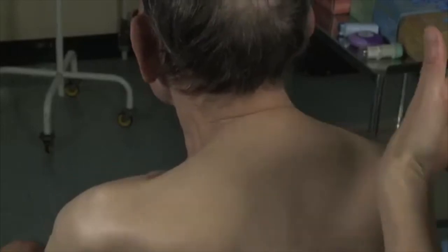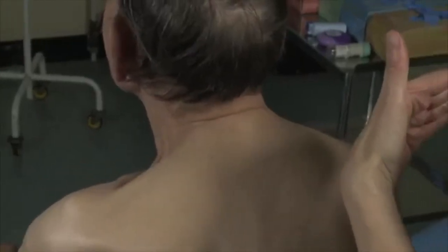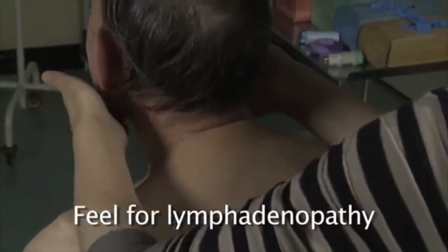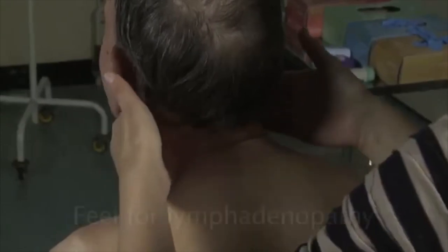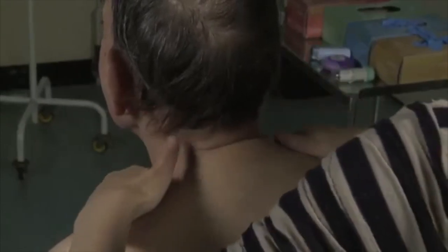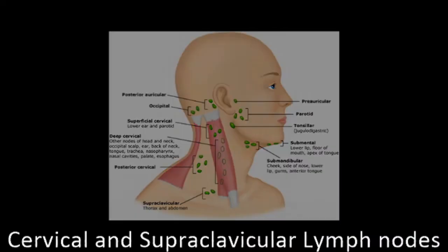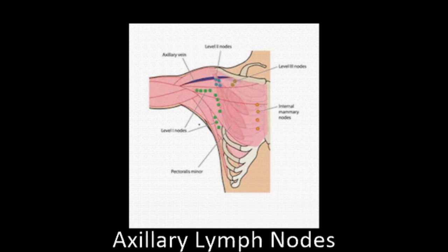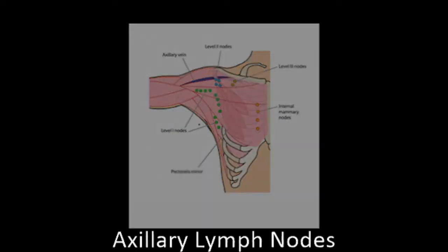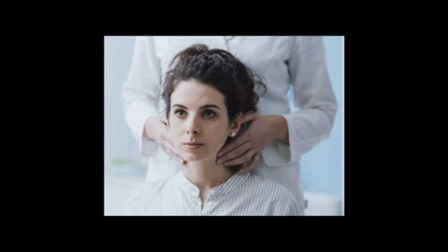Reposition the patient sitting forward. Whilst they are in this sitting position, it is a good opportunity to feel for lymphadenopathy using a systematic approach. Feel for raised or swollen cervical, supraclavicular and axillary lymph nodes. Lymph nodes can be palpated from behind the patient - start from the chin and work backwards.